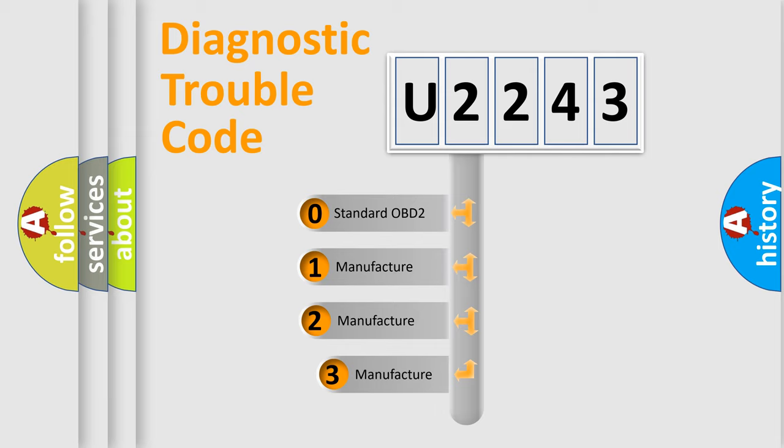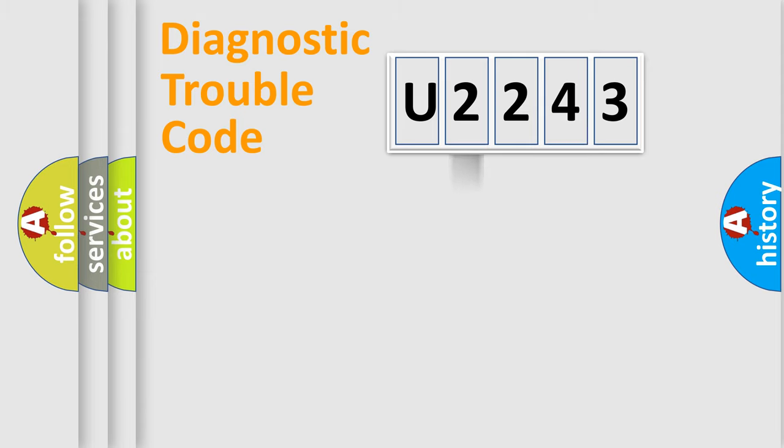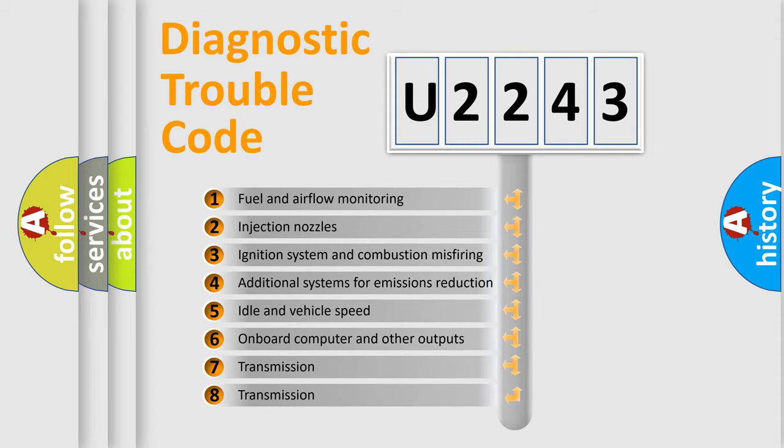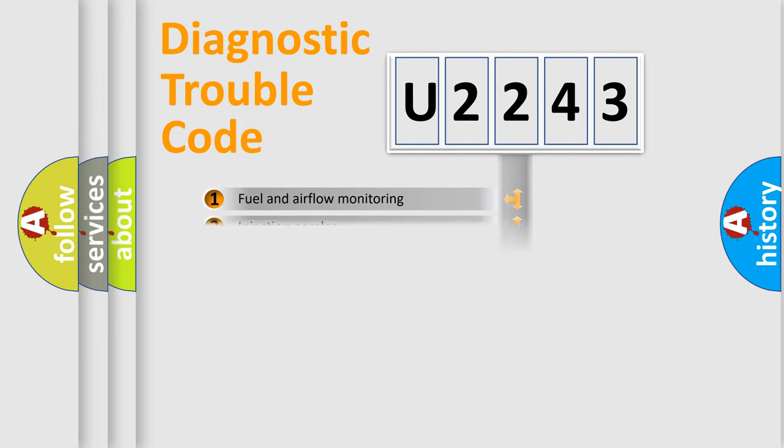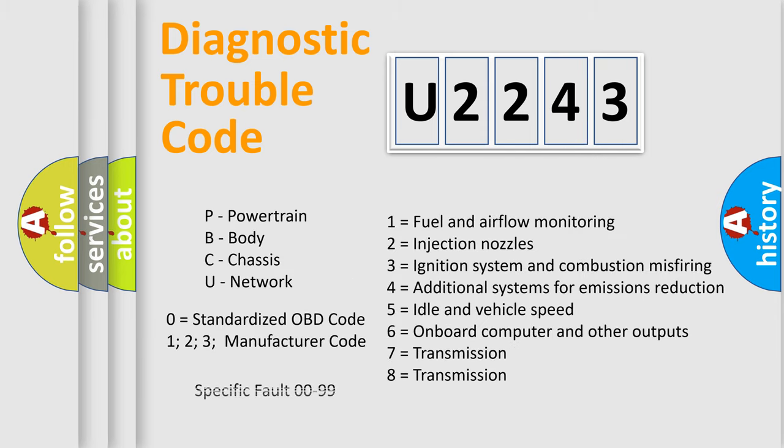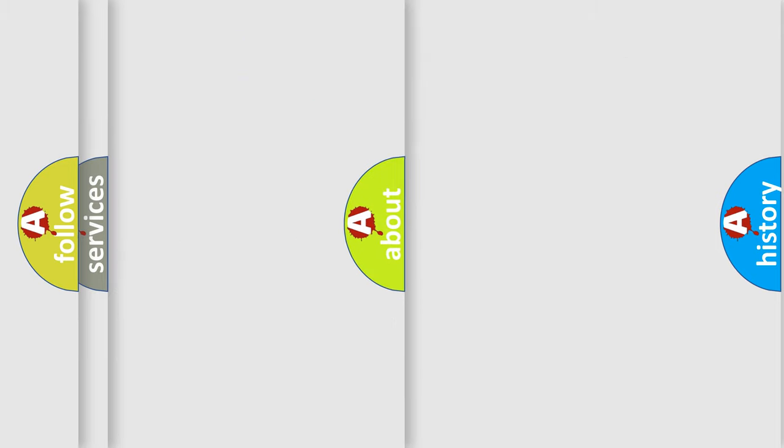If the second character is expressed as zero, it is a standardized error. In the case of numbers 1, 2, or 3, it is a manufacturer-specific error expression. The third character specifies a subset of errors. The distribution shown is valid only for standardized DTC codes. Only the last two characters define the specific fault of the group. This division is valid only if the second character code is expressed by the number zero.